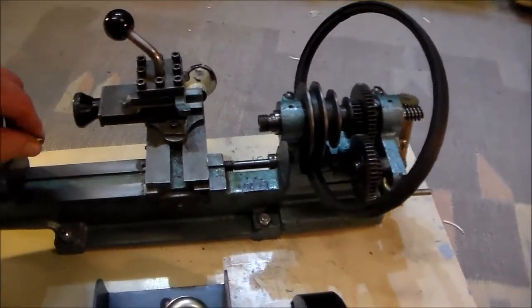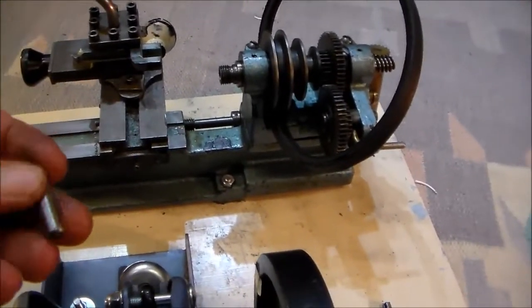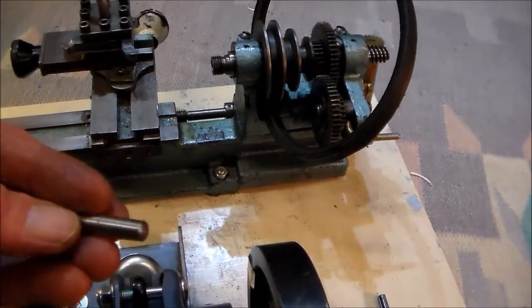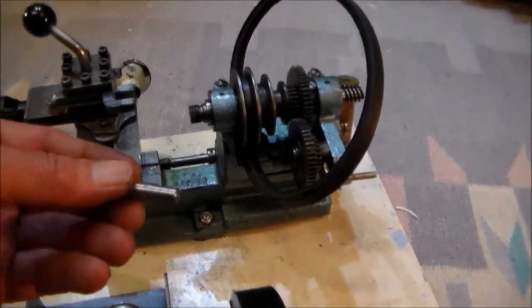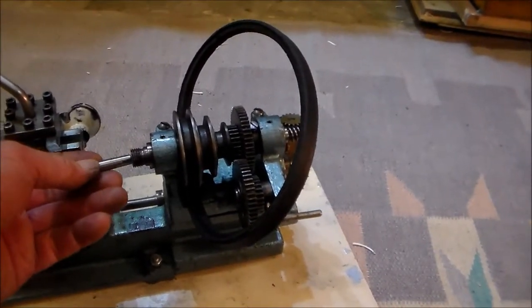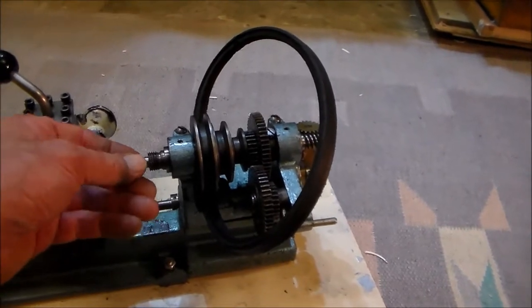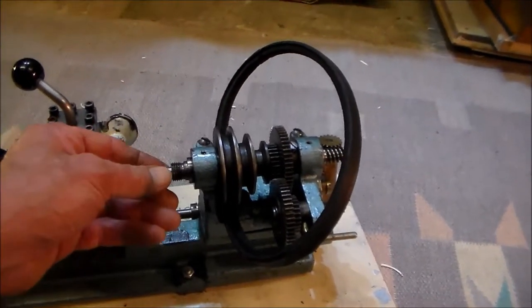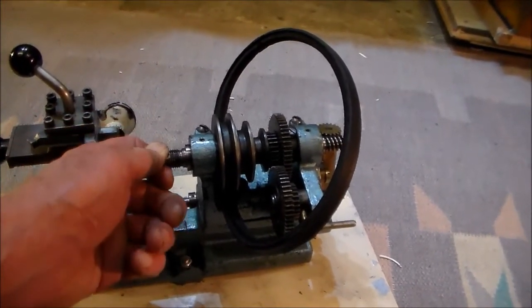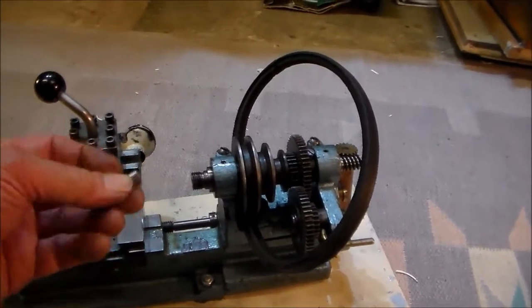Now, the center that goes in is one that's designed for the machine. That's a truncated MT0. That seems to fit in there quite nicely. In fact, I have to drift it out if I push it in. It does grip quite well.